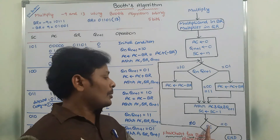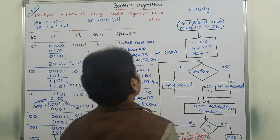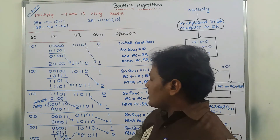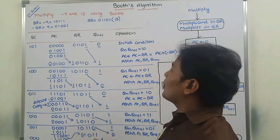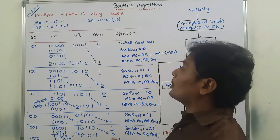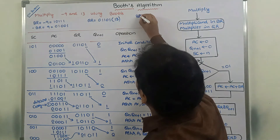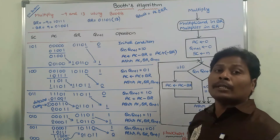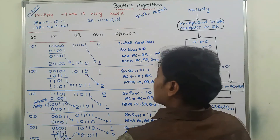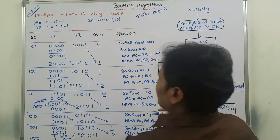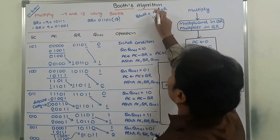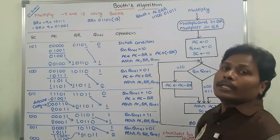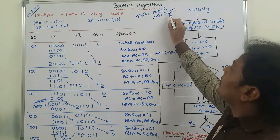SC=0, so we stop the operation. The result is stored in AC and QR registers. The value stored in AC is 1, 1, 1, 0, 0. The value stored in QR register is 0, 1, 0, 1, 1. The Qn+1 bit is not considered in the result. The final result is 1, 1, 1, 0, 0, 0, 1, 0, 1, 1.